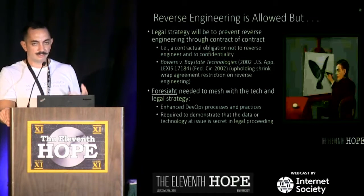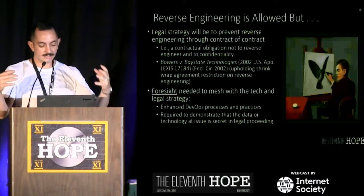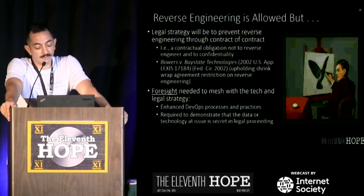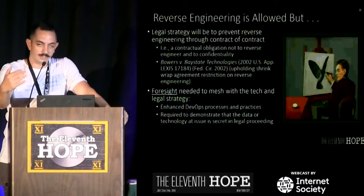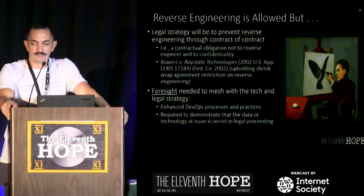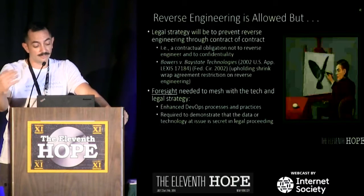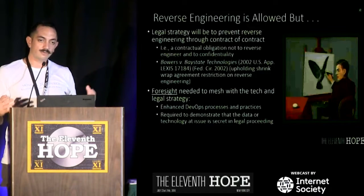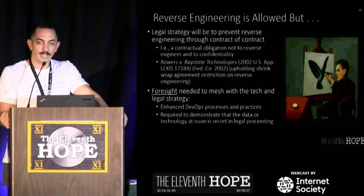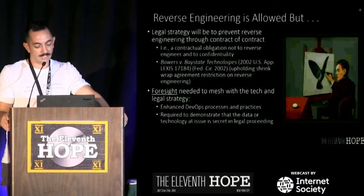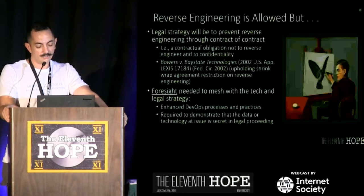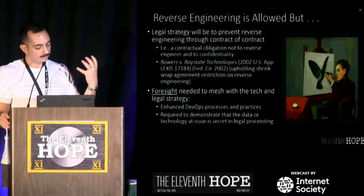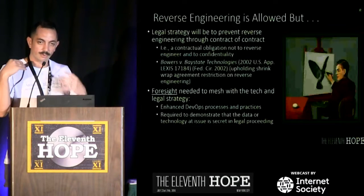Reverse engineering is allowed, but you really do need a methodology to protect trade secrets that combines legal strategy with technical foresight. We're going to start seeing contractual obligations based on end-user license agreements — some kind of contractual obligation to maintain a duty of confidentiality and to not reverse engineer. If you have a duty not to disclose or keep information confidential, violating that duty can be considered misappropriation. What you really need is foresight during the development process to construct reasonable means of protection of the trade secret itself.